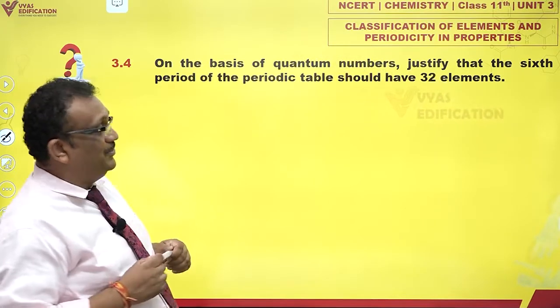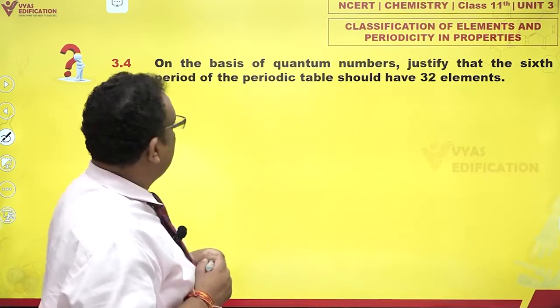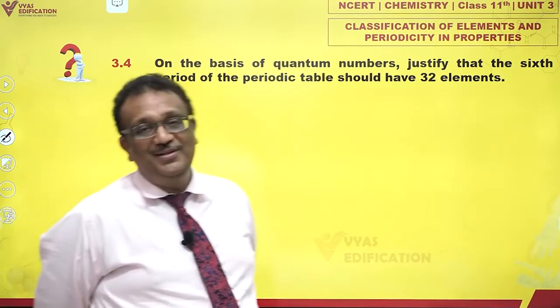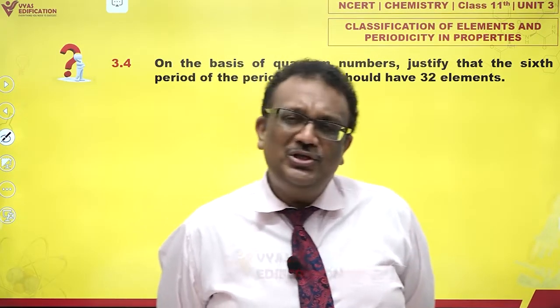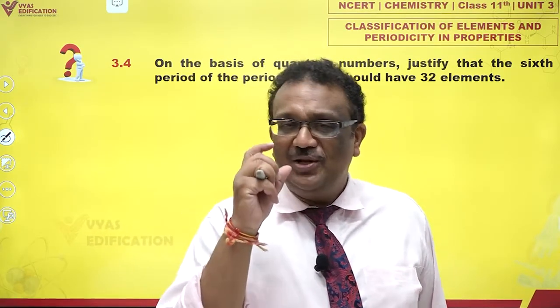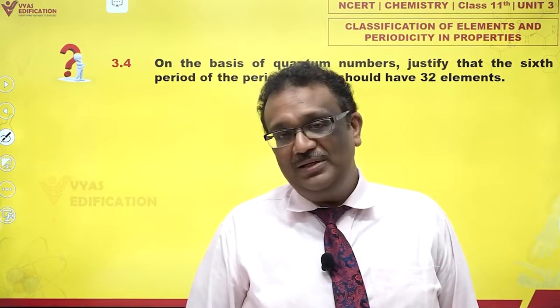On the basis of quantum numbers, justify that the sixth period of the periodic table should have 32 elements. If you just look at the organization of the periodic table, my dears, tell me how exactly is the periodic table built?